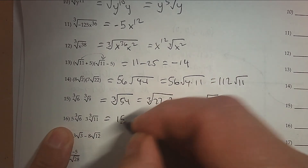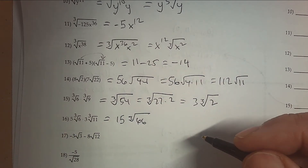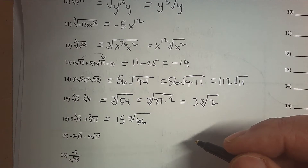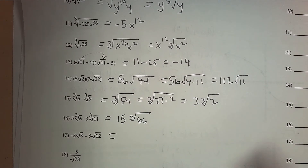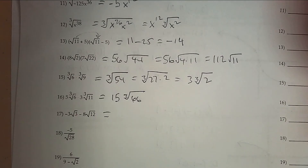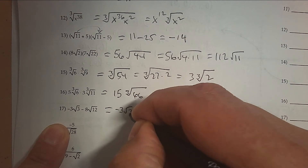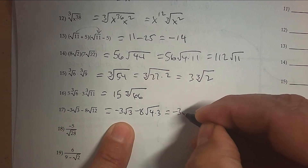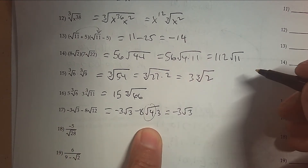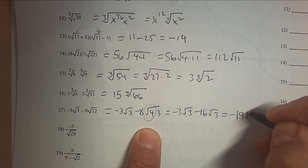Multiply the numbers in front, multiply what's underneath. Thinking about what would go into 66 — not 8, not 27. When you subtract, the radicals have to be the same. So √12 is really 4 times 3, so we have −3√3. The square root of 4 is 2, times −8 is −16. And when you subtract, you get −19√3.